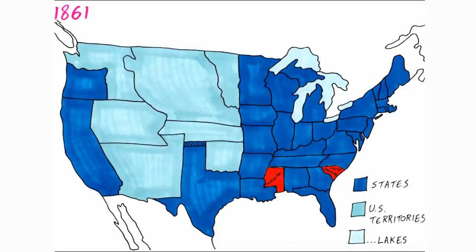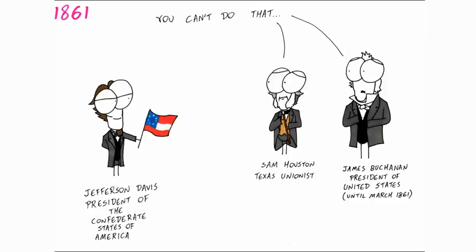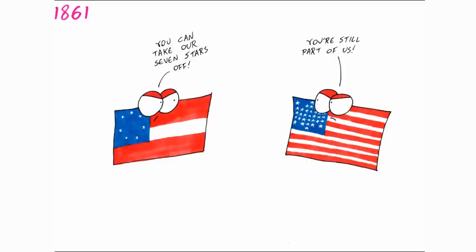After Lincoln's election, the southern states were ready to leave. There were attempts to compromise on slavery, but they were rejected, and thus seven of the southern states declared their secession from the United States and became the Confederate States of America, with its capital in Montgomery, Alabama. The North, and indeed Unionists in the South, saw this as illegal, believing the Founding Fathers established a perpetual union.